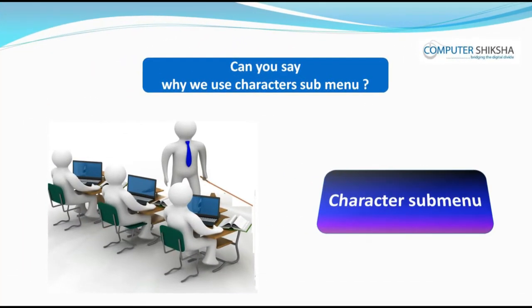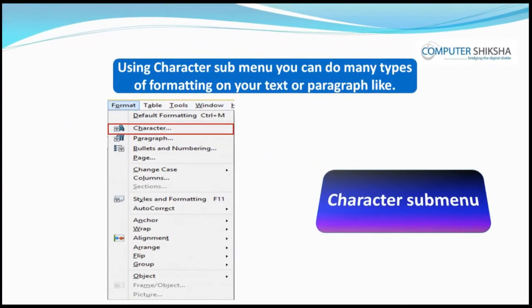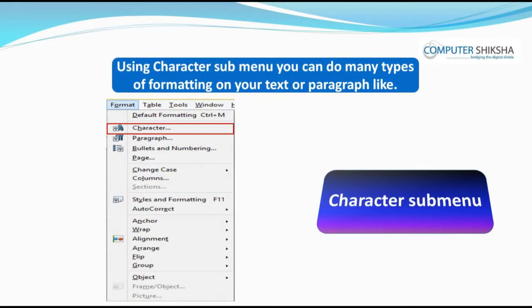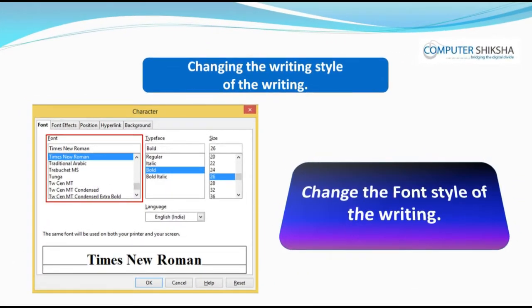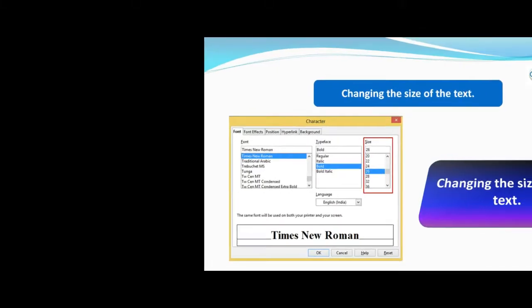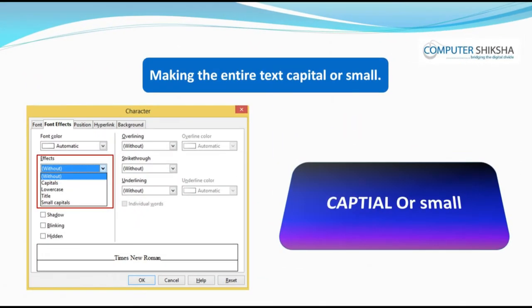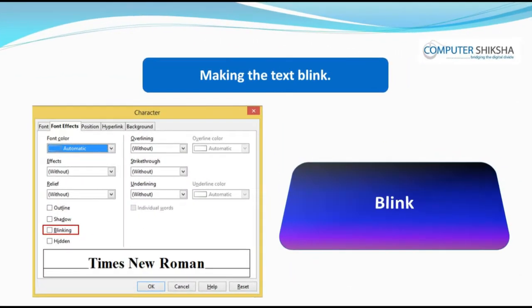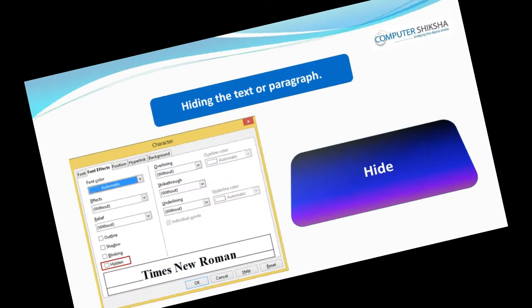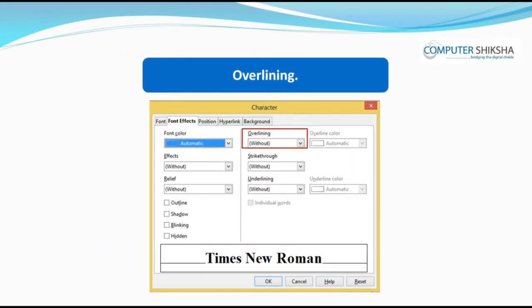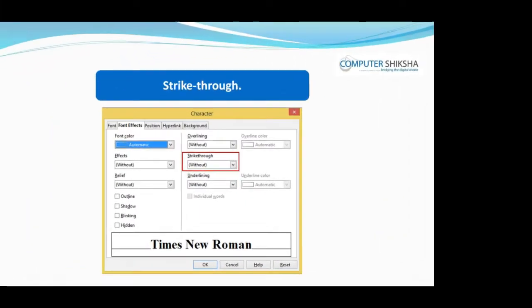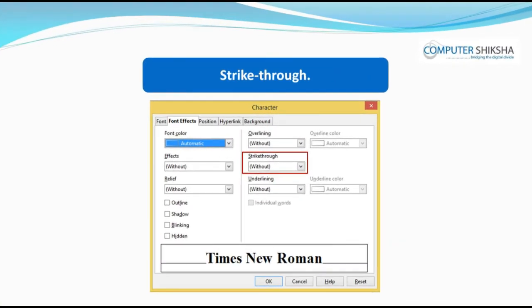Can you say why we use the character submenu? Using the character submenu, you can do many types of formatting on your text or paragraph, like changing the writing style, changing the size of the text, making the entire text capital or small, making the text blink, hiding the text or paragraph, overlining, underlining, or striking through the text.